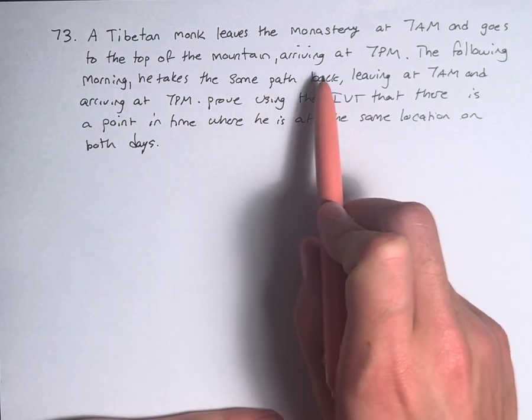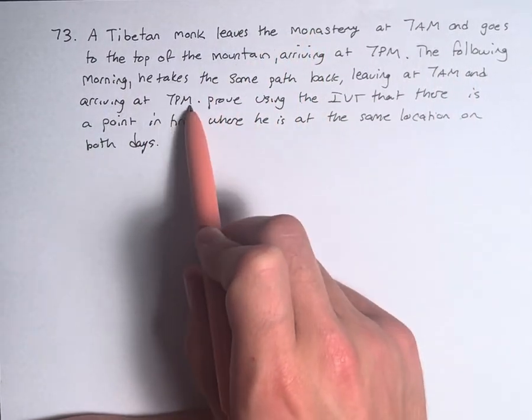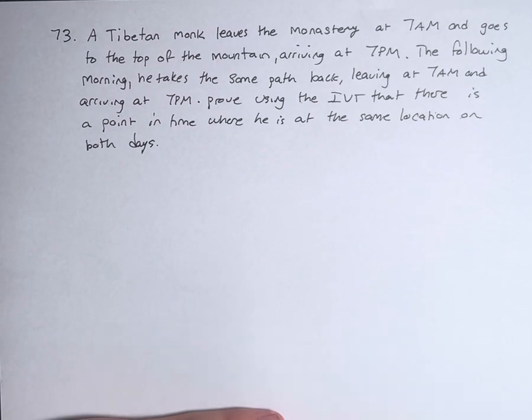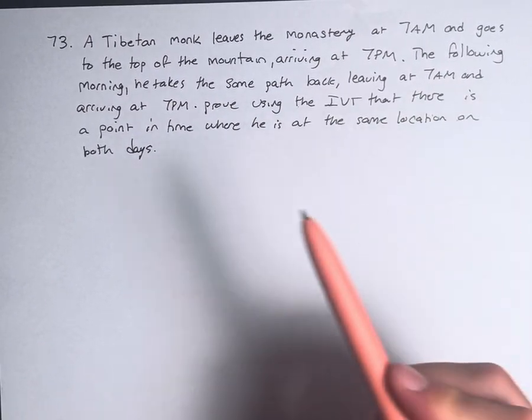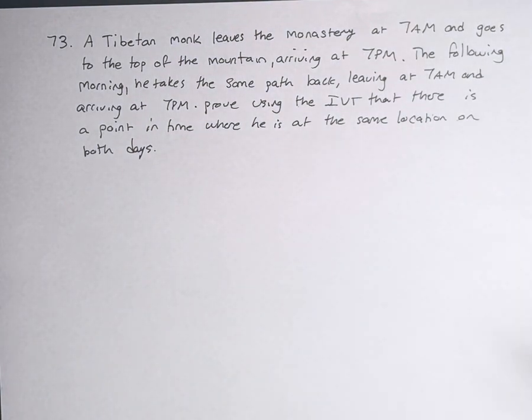The following morning, he takes the same path back, leaving at 7 a.m. and arriving back home at the monastery at 7 p.m. We are asked to prove, using the Intermediate Value Theorem, that there is a point in time where he is at the same location on the mountain on both days.